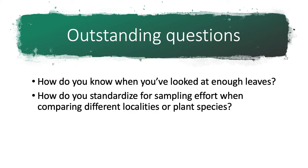There's also a question of how to standardize for sampling effort when comparing different fossil localities or different fossil plant species. If you have 5,000 leaves from one locality but only 50 from a second, can you make any meaningful comparisons? And if you want to standardize for sampling effort, should you subsample your larger localities down to a set number of leaves or to a set amount of leaf surface area?